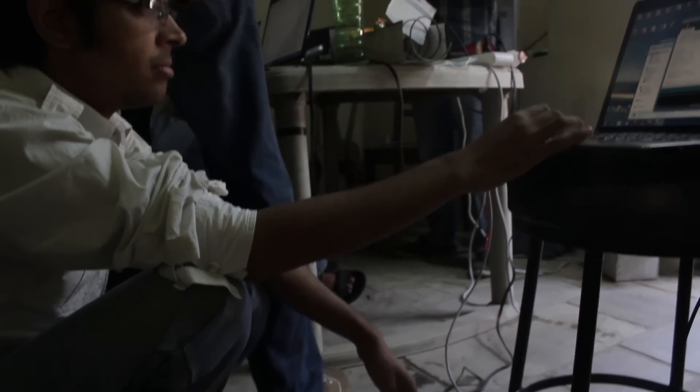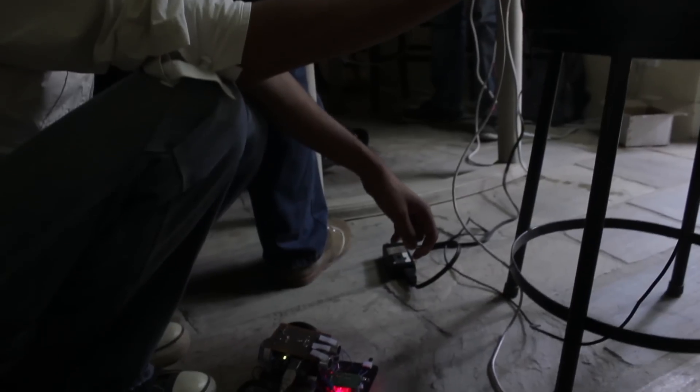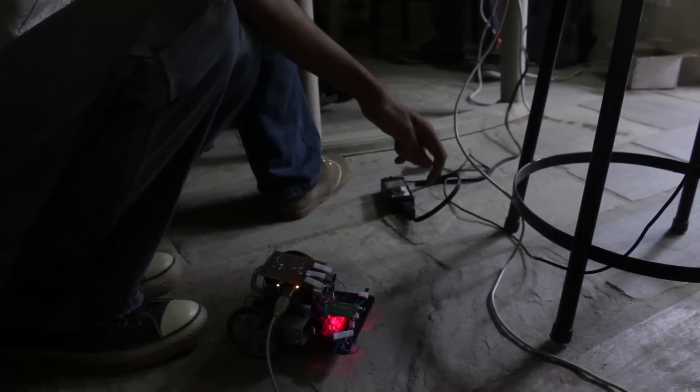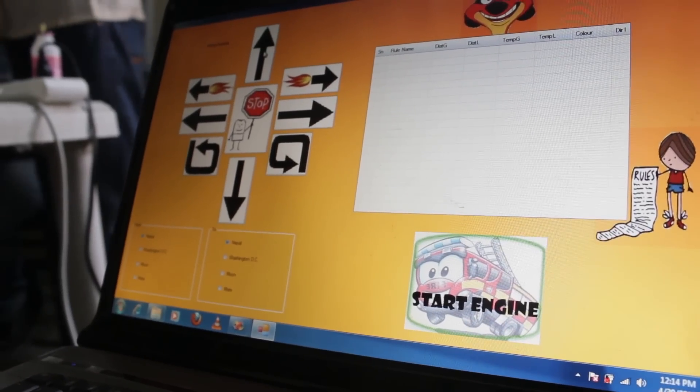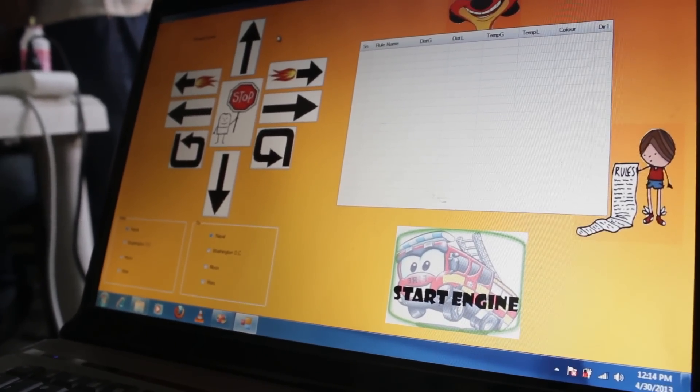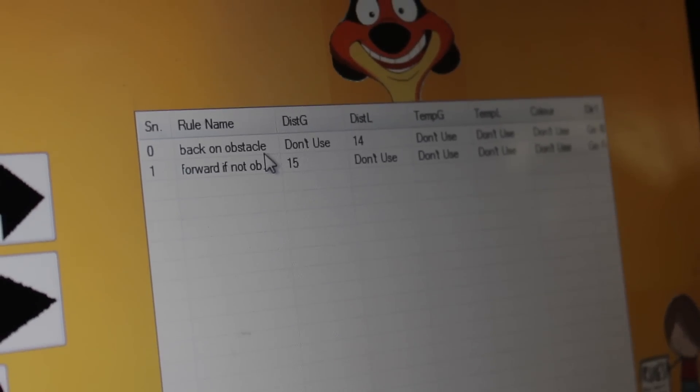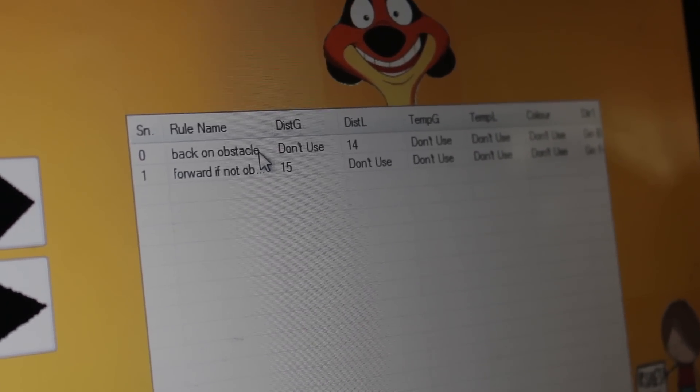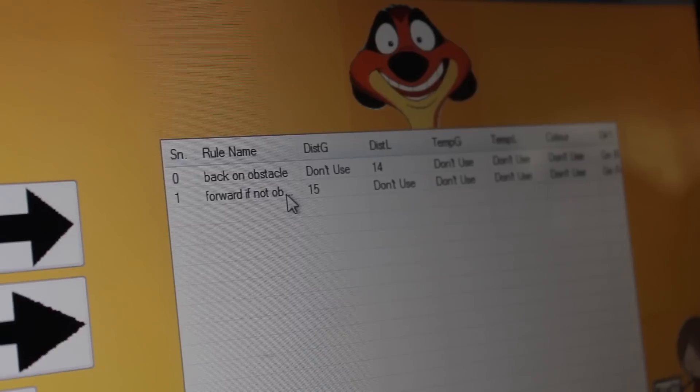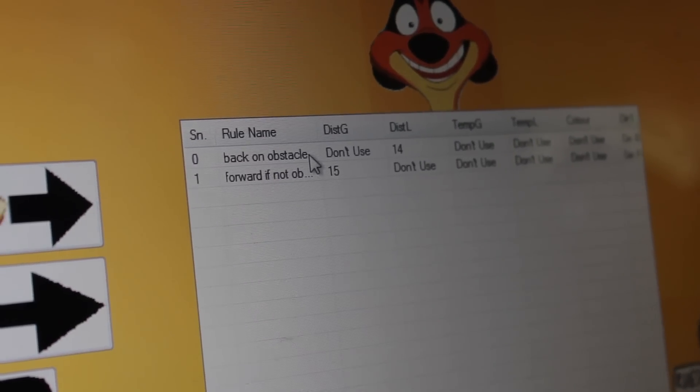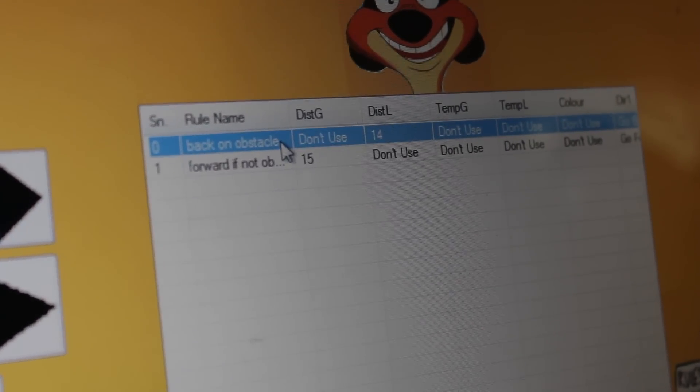The way we've done that is by creating an interface where you can string together rules of logic and you can do this without writing any code. We have these rules over here that you can create that says if you see an obstacle, go back, and if you don't see an obstacle, go forward.